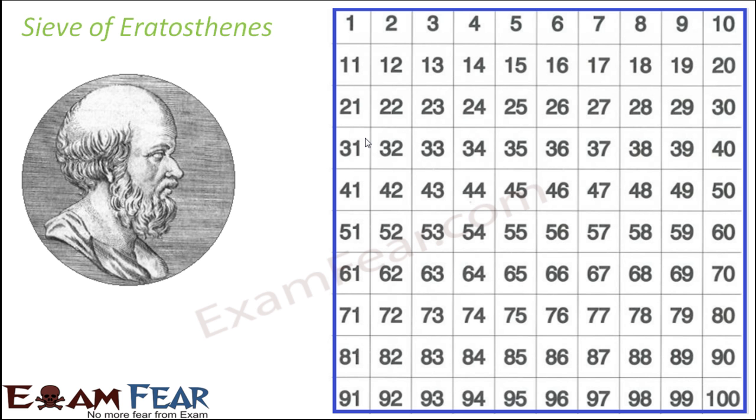So here also it will separate the prime numbers and the composite numbers, and that is why it acts like a filter and is called a sieve. So this sieve was given by this Greek mathematician named Eratosthenes, that is why it is called sieve of Eratosthenes.